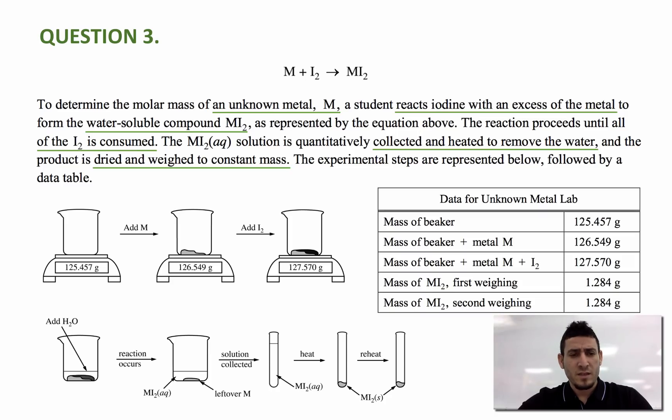If I look at the experimental steps, I can see that I have the mass of empty beaker, and then we add the metal M to it. So we have the mass of the beaker plus the metal M. Then we add iodine. So we have now the mass of empty beaker plus the metal M plus iodine, 127.570 grams. Then we add water to the mixture, and the reaction will happen. As I can see that the product MI2, it will be soluble in water, and the excess metal M will appear at the bottom of the flask or the beaker.